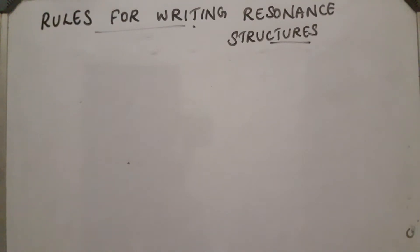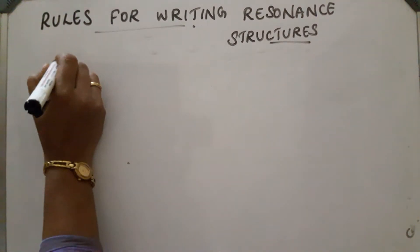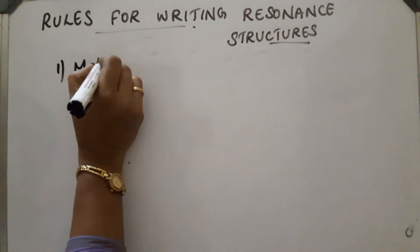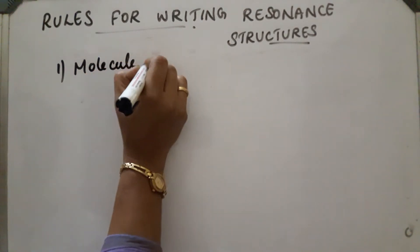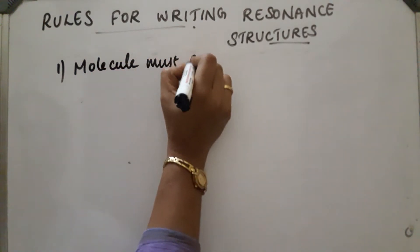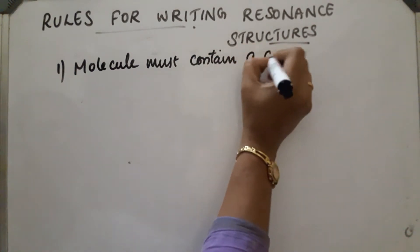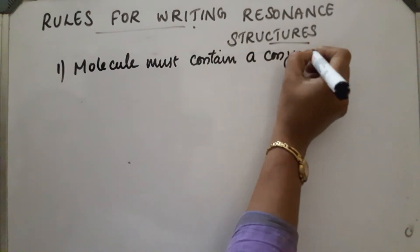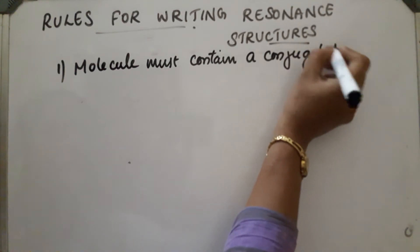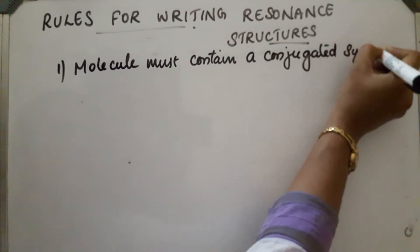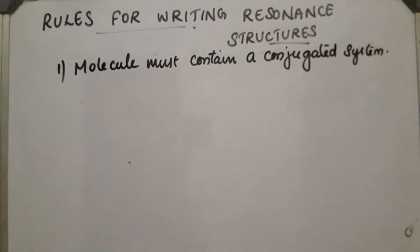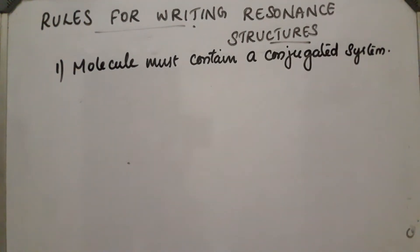Rules for writing resonance structures. First rule: the molecule must contain a conjugated system, meaning there must be alternating single and multiple bonds.